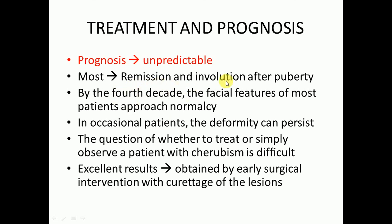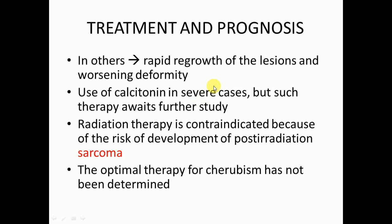Regarding treatment and prognosis, the prognosis is unpredictable. Mostly there will be remission and involution after puberty, so we wait until puberty. By the fourth decade, the facial features of most patients approach normalcy, though in occasional patients the deformity can persist throughout life. Whether to treat or simply observe is difficult. Early surgical intervention with curettage has shown excellent results in some cases but has caused rapid growth and worsening deformity in others. Use of calcitonin in severe cases is possible but awaits further study. Radiation therapy is contraindicated due to the risk of post-radiation sarcoma. The optimal therapy for cherubism has not yet been determined.